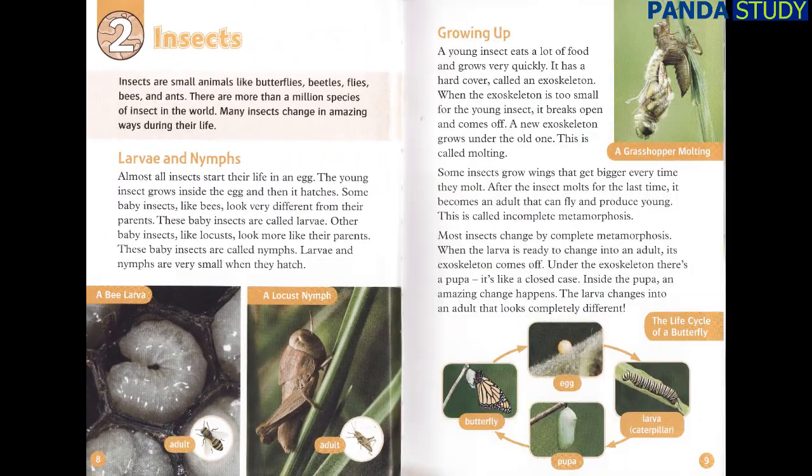Chapter 2: Insects. Insects are small animals like butterflies, beetles, flies, bees, and ants. There are more than a million species of insect in the world. Many insects change in amazing ways during their life.